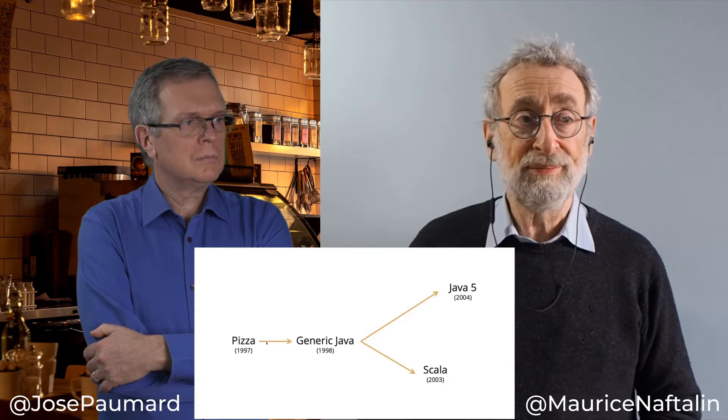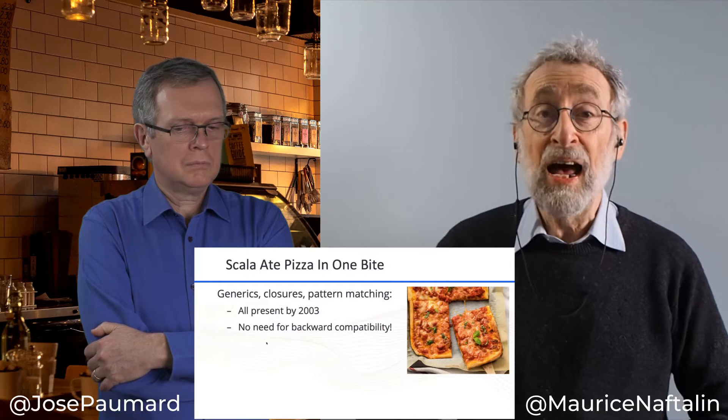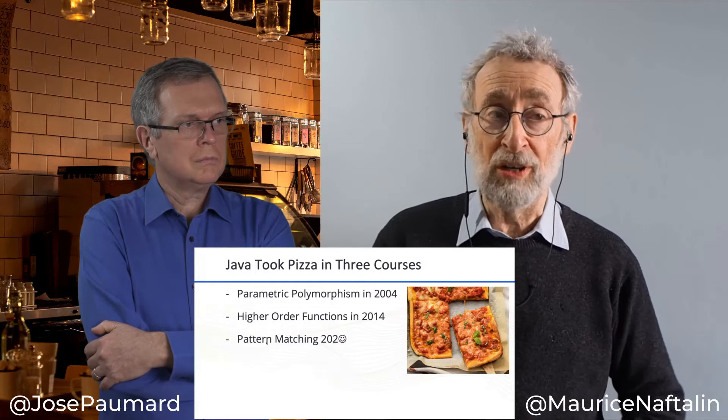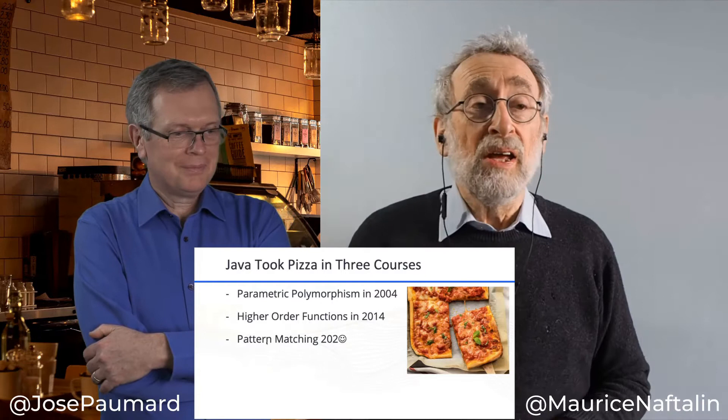Scala was able to eat PIZZA in one bite — generics, closures, and pattern matching all in one go. But Java, by contrast, has taken three attempts to incorporate the ideas of PIZZA: parametric polymorphism (generics) in 2004, higher order functions (lambdas) in 2014, and pattern matching in 2020 — real soon now. José will be talking about pattern matching later on. Let's have a look at each one of these features in a little bit more detail.